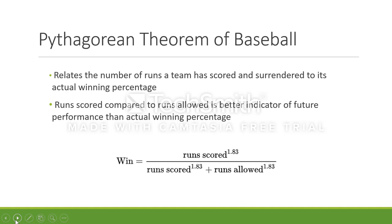Finally, another one of Bill James' inventions: the Pythagorean Theorem of Baseball. It relates the number of runs a team has scored and given up to its actual winning percentage. James concluded that this ratio is more indicative of a team's ability than their actual record. The theory is that over time, a team's actual record will approach the Pythagorean expected win-loss record, and not the other way around. This theorem has proven fairly accurate — the average difference between actual and expected wins is slightly less than three games, which in a 162-game season is not very many.